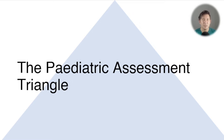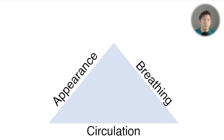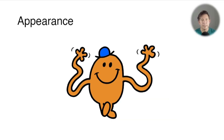It's helpful to break it down. There have been a few different attempts using different scoring systems, and I think this one is probably one of the simplest and quite well validated. The triangle is just these three things: A, B, C — appearance, breathing, and circulation. We all know ABC as airway, breathing, circulation, and this just replaces the airway A with A for appearance, while breathing and circulation stay the same.